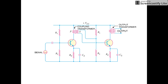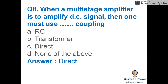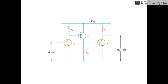Transformer coupling is used for power amplification — here is the transformer used for coupling between two transistors. The noise factor of an ideal amplifier expressed in decibels is zero. When a multi-stage amplifier is to amplify DC signals, one must use direct coupling, where no inductor or capacitor is used between the transistors.